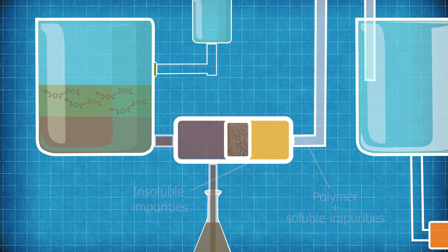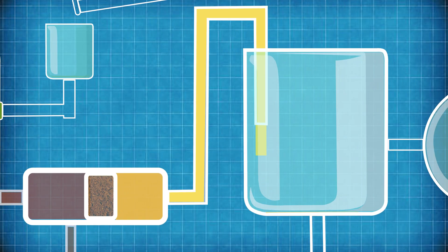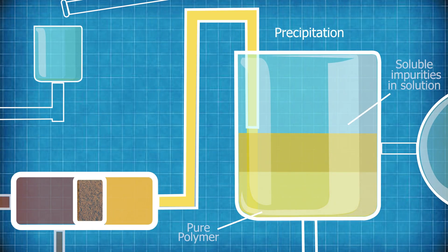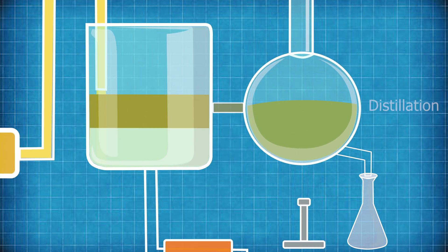The solution then goes through the process of precipitation to separate out the remaining soluble impurities from the pure polymer. The impurities are now all alone in solution in the CreaSolve secret sauce.